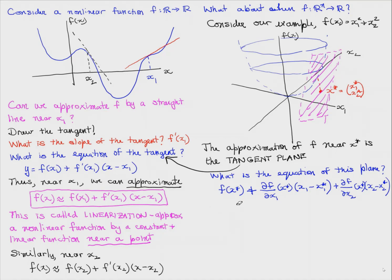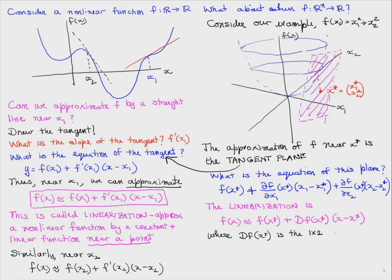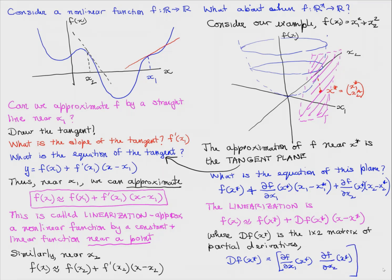The linearization is f of x is approximately f of x star plus df of x star. This df of x star is a 1 by 2 matrix consisting of the partial derivatives df by dx1 evaluated at x star and df by dx2 evaluated at x star. This df is called the derivative of the function. You can see how the linearization is very similar in form to the linearization for scalar functions.